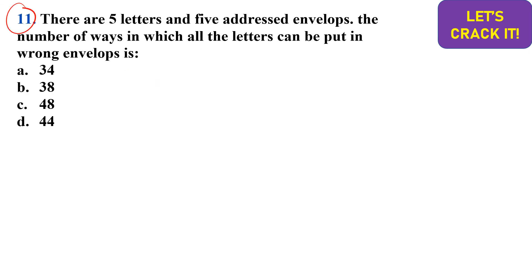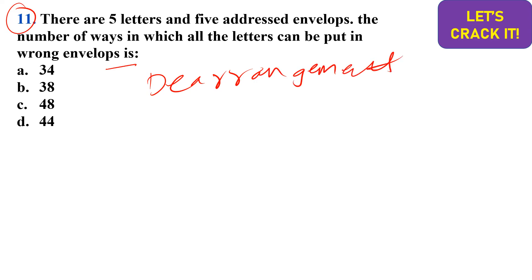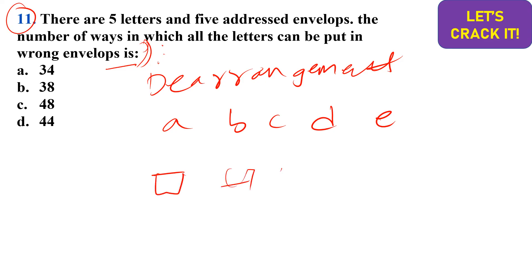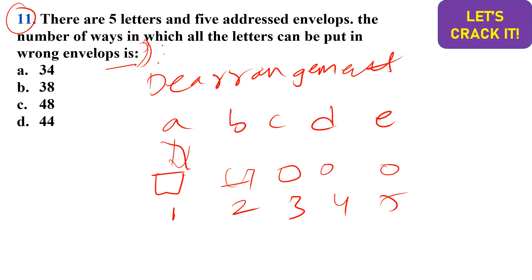The eleventh question relates to the concept of derangements. There are five letters and five addressed envelopes, and we need to find the number of ways all letters can be placed in the wrong envelope. For example, letters A, B, C, D, E each have a corresponding correct envelope, but each must go into any envelope except the correct one.